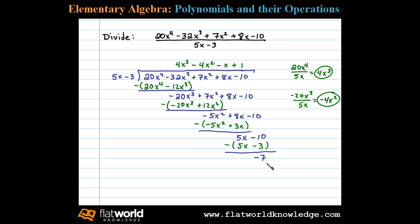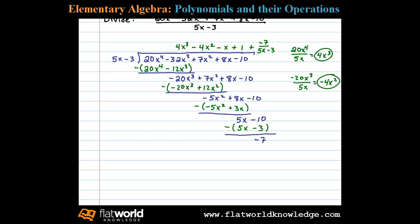When left with a remainder, we treat it just as with real numbers. We add the fraction with the remainder in the numerator over the divisor. In this case, 5x minus 3. The answer is 4x cubed minus 4x squared minus x plus 1, minus 7 over 5x minus 3.